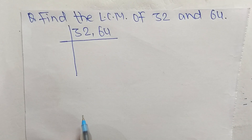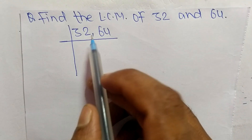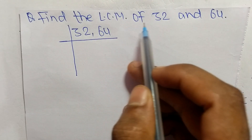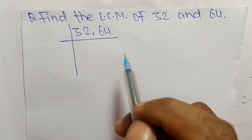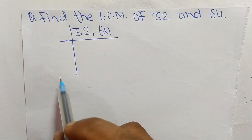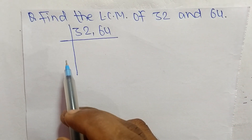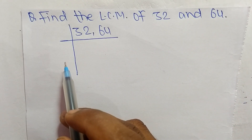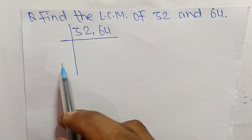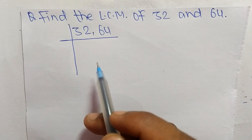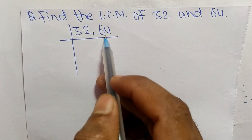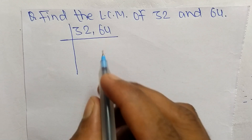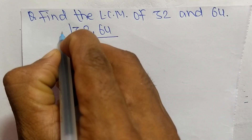Today in this video we shall learn to find the LCM of 32 and 64. To find the LCM, first we have to find the lowest number that can exactly divide 32 and 64.